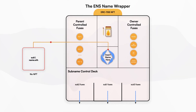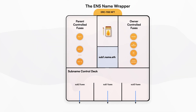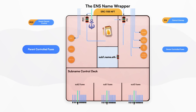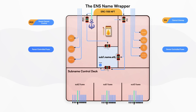Let's wrap one of our subnames. Now the subname is a wrapped ERC-1155 NFT too. Those lines you see represent so-called fuses for your wrapped ENS name, which apply certain perks or restrictions, like making the NFT non-transferable.